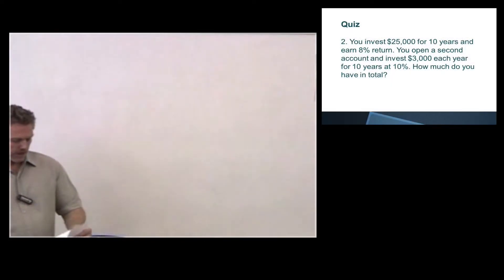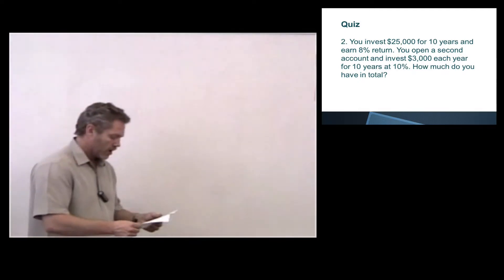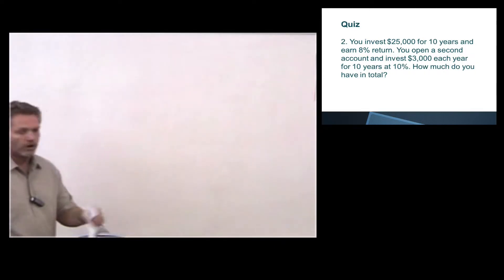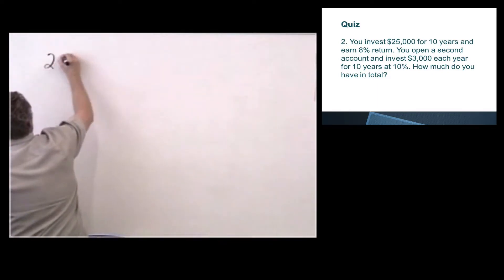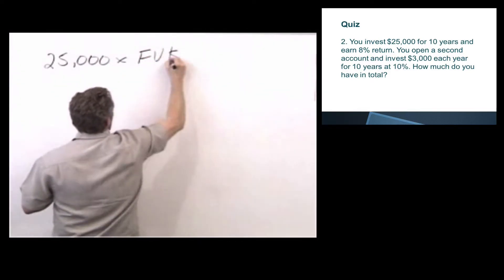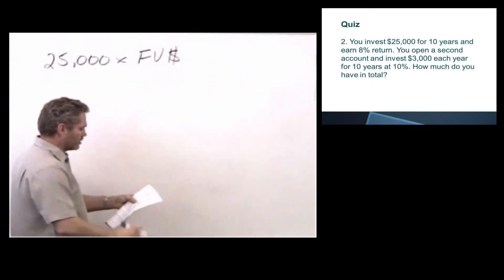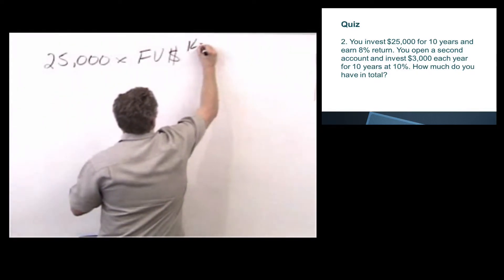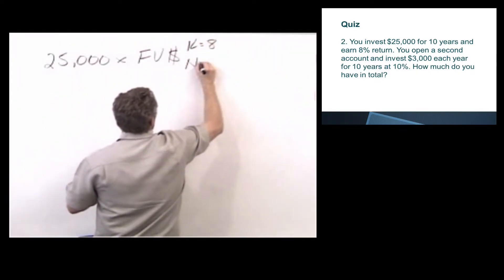Question two on the quiz. You invest $25,000 for 10 years at 8%. You open a second account and invest $3,000 each year for 10 years at 10%. How much do you have in total? All right, so we invest $25,000 for 10 years. That's a lump sum. So we're looking at $25,000 times future value of $1. And we have here it's 10 years at 8%, so K equals 8 and N equals 10.